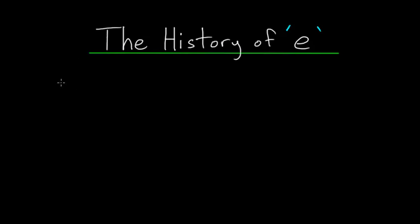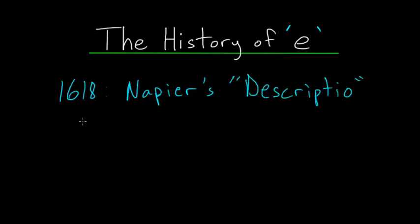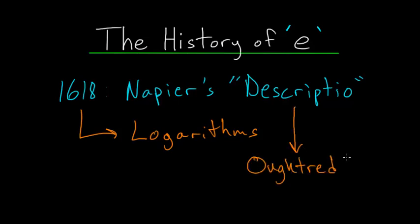The history of E starts in the year 1618 with the second edition of John Napier's book, The Descriptio. In this book, which was mostly about logarithms, there is an indirect reference to E. Truthfully though, the second edition of Napier's book was actually written by William Uhtred, who is an English mathematician. And like I said, the reference to E was indirect.